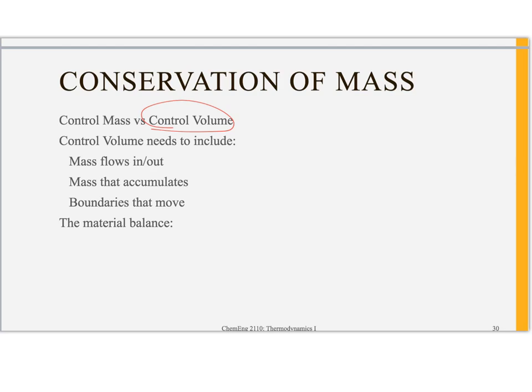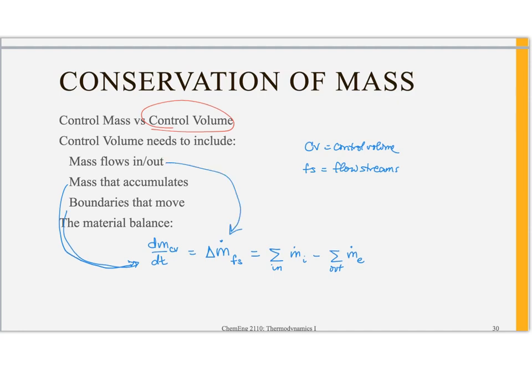So to do that my material balance ends up saying that the change in mass inside the control volume with time, this is the part that allows for moving boundaries and accumulation, is going to be the change in the mass flow rates in my flow stream. So CV is control volume and FS is flow streams, and the change in the mass flow rates of my flow streams can be probably more conveniently written as looking at all of my mass flow rates on my streams in minus the mass flow rates of all my streams out. And so this piece gets me all my mass flow in and out.